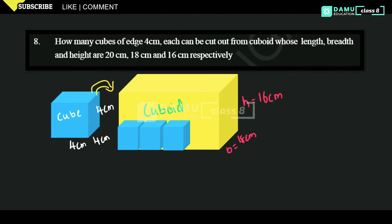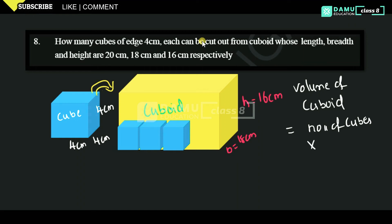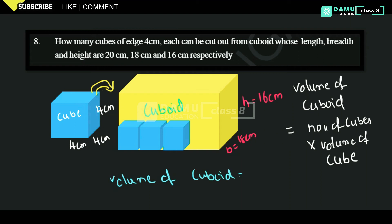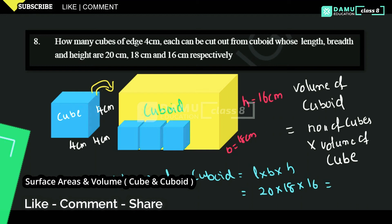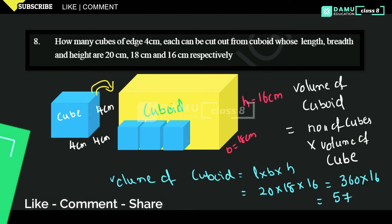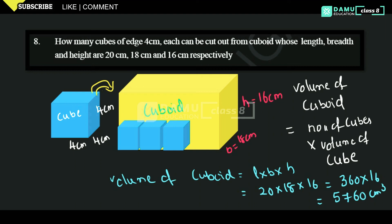So what we can say here is: volume of cuboid will be equal to number of cubes multiplied by volume of each cube. Volume of cuboid is length into breadth into height — that is 20 into 18 into 16. So 20 into 18 is 360, and 360 into 16 gives 5760 centimeter cube.